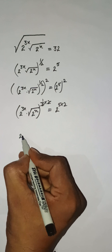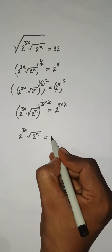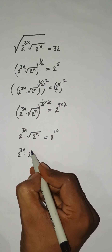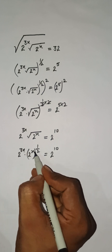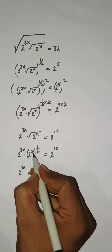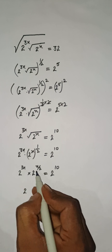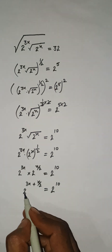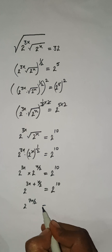This 2 and this 2 will cancel. We have 2 to the power 3x into root under 2 to the power x, equal to 2 to the power 10. This can be rewritten as 2 to the power 3x multiplied by 2 to the power x with power 1 upon 2, equal to 2 to the power 10. This x and 1 by 2 multiply together, giving 2 to the power 3x multiplied by 2 to the power x by 2, equal to 2 to the power 10.